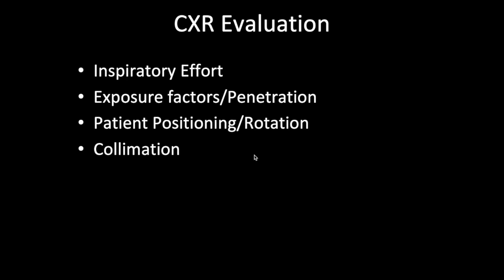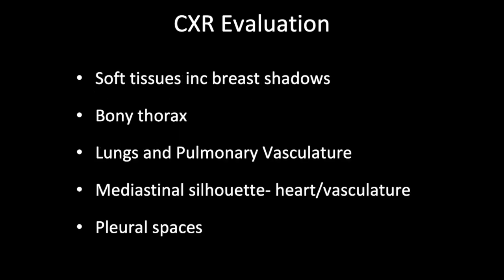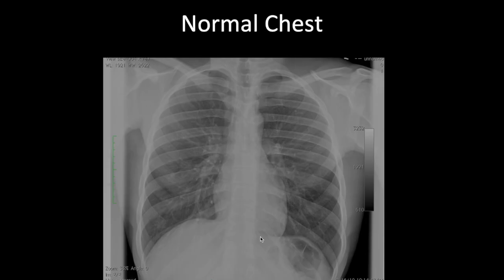I'm going to focus right now on how to evaluate the normal chest. So this is a normal chest radiograph. When you're evaluating any radiograph or any imaging test, you need to treat it like an experiment. You need to first determine whether or not the image is of diagnostic quality in the patient of interest. The first thing you need to do is identify the patient. This image is anonymized for teaching purposes, but there will be a name plate or identification marker on the film indicating the patient's name, their age, and registration number.